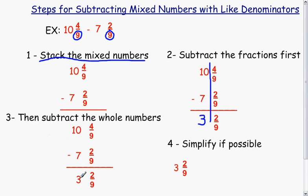Alright, so basically what we have is 3 and 2 ninths and then we simplify if possible. 2 and 9 share no other factors other than 1. So 2 ninths is already in its simplest form. So 3 and 2 ninths is our mixed number in simplest form.